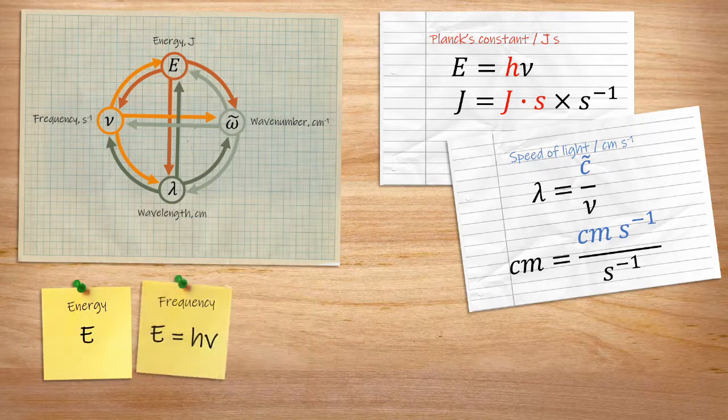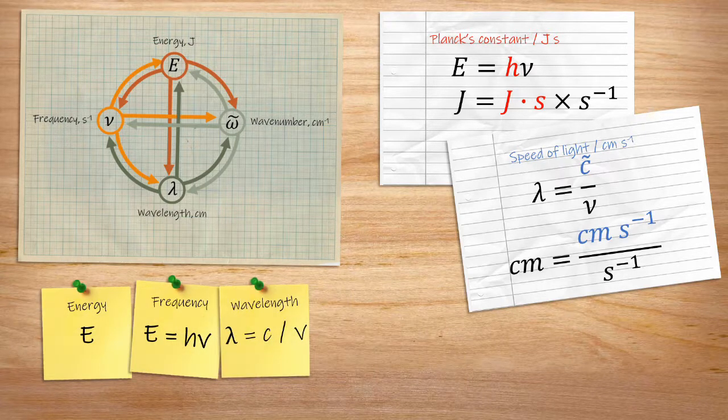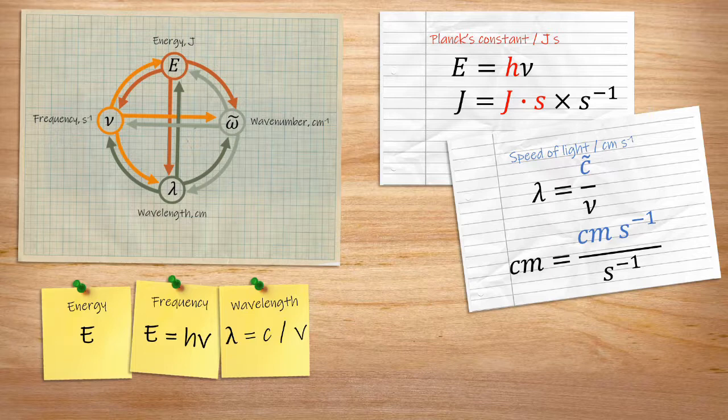Doing it in stages can help too. Going from energy to wavelength via Planck's constant and the speed of light in two steps gives you two simple calculations to check.